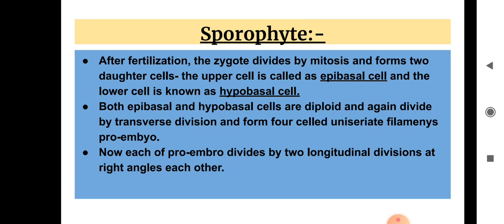The epibasal and hypobasal cells again divide by transverse divisions to form a four-celled uniseriate filament called the pro-embryo. Each cell of the pro-embryo then divides by longitudinal divisions at right angles.